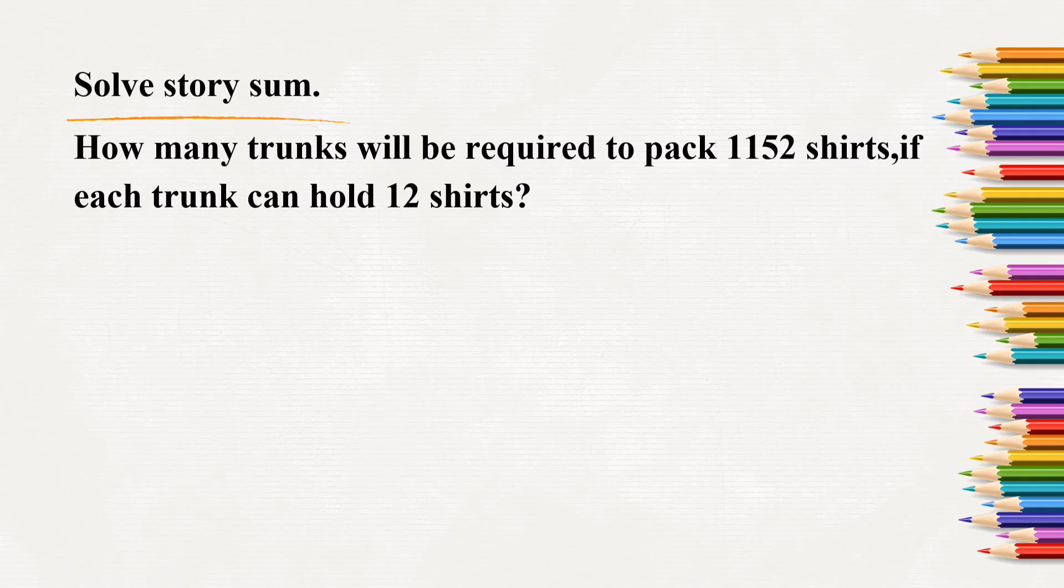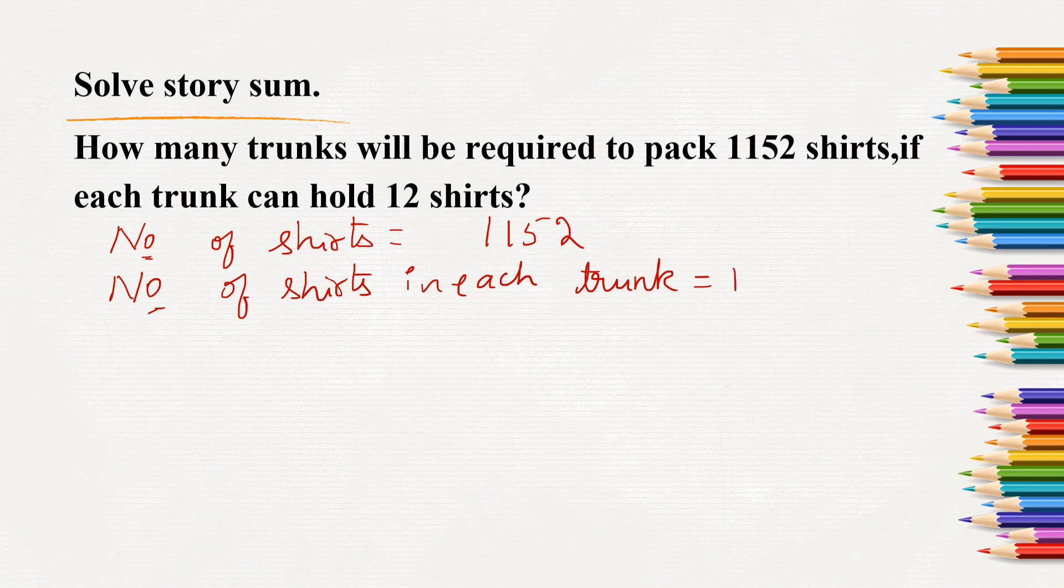Here in solution, number of shirts equals 1,152. Number of shirts in each trunk equals 12. Number of trunks we will have to find out. So, here 1,152 shirts divided by 12 shirts in each trunk. We will have to find out. Divided by 12.